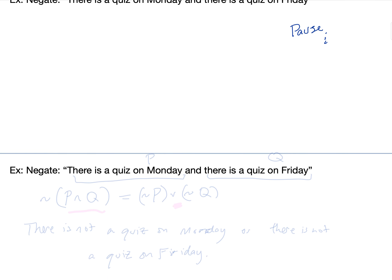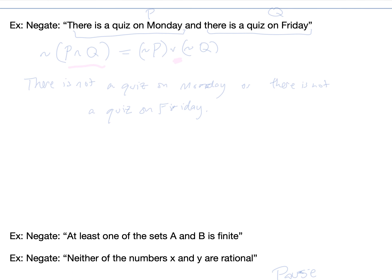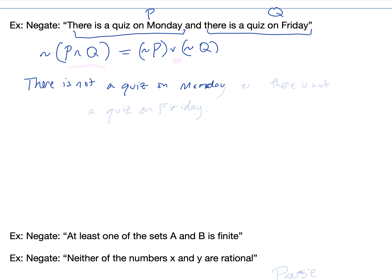If we want to negate 'there is a quiz on Monday and there is a quiz on Friday,' this is a statement of the form p and q. By DeMorgan's laws, this is equivalent to not p or not q. So the negation is: there is not a quiz on Monday, or there is not a quiz on Friday.